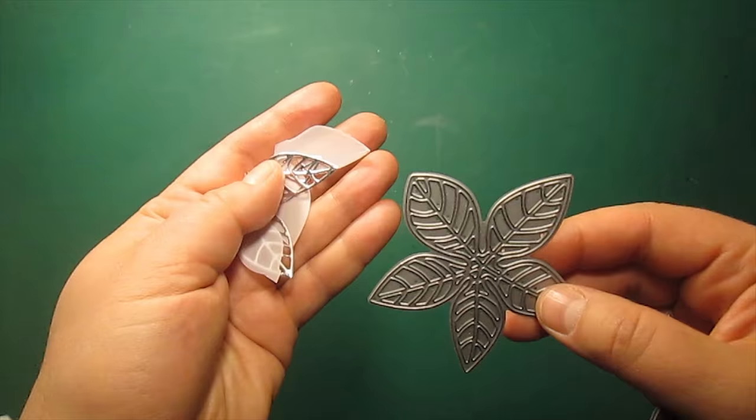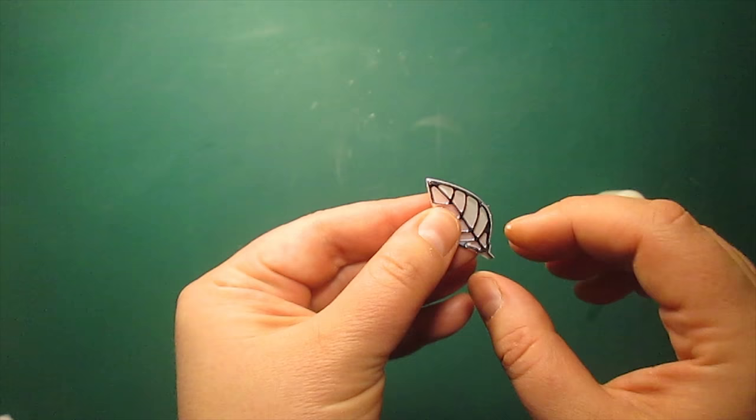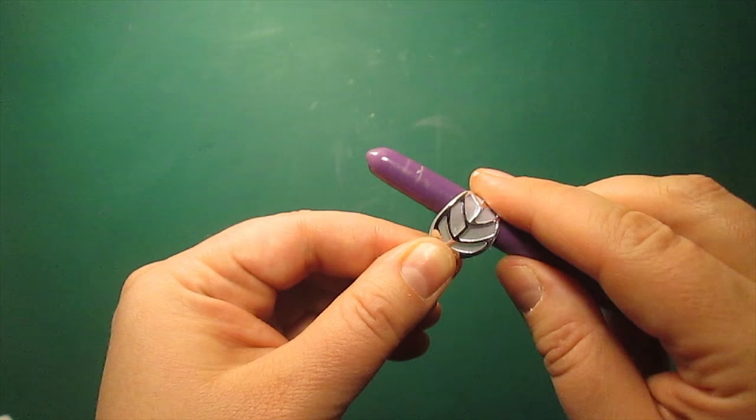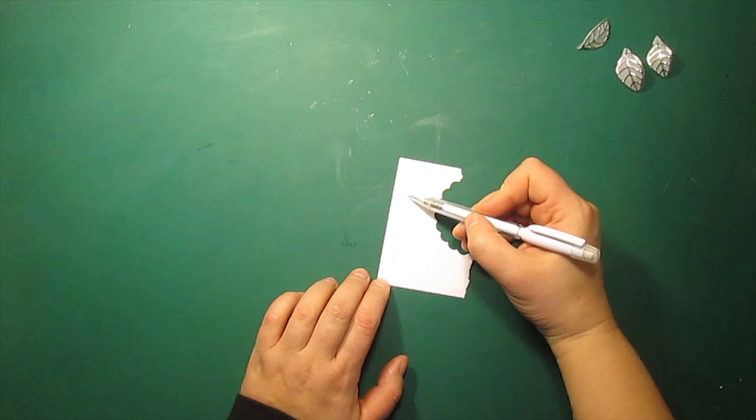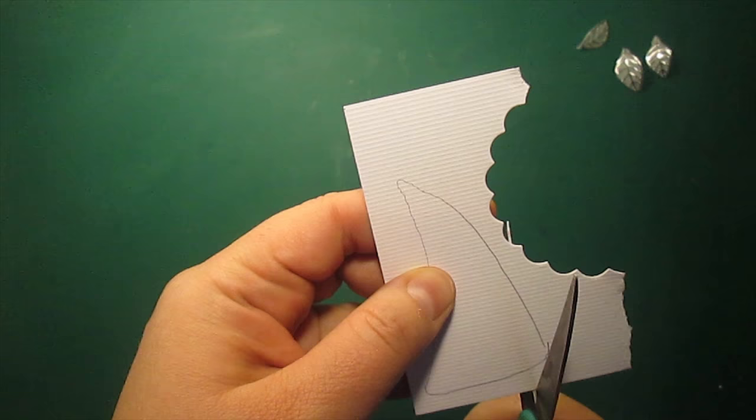I'm using those poinsettia outline and background dies to create some leaves for the flower that is going to be my focal image. I'm just sticking the two pieces together with the liquid glue and giving them a slight curve. Now I'm drawing a kind of wonky triangle shape and then I will cut it out. This will be the base for my flower.